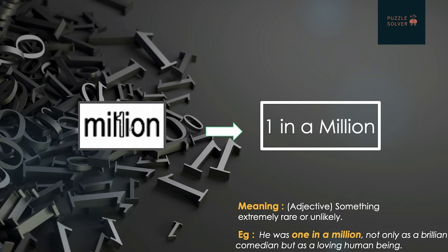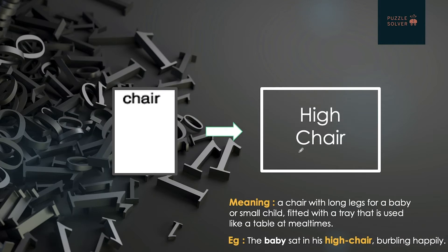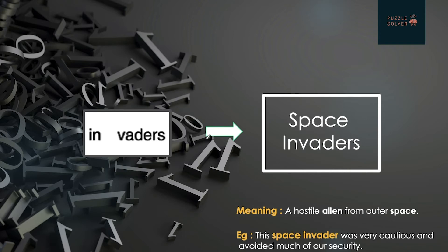Number one is written in the middle of the word 'million', so it will be 'one in a million'. Next, 'I'll' — that is 'I will' — is written in the middle of the word 'minute', so it will be 'I will be there in a minute'. Next, 'chair' is written on the top of this box, so it will be 'high chair'.